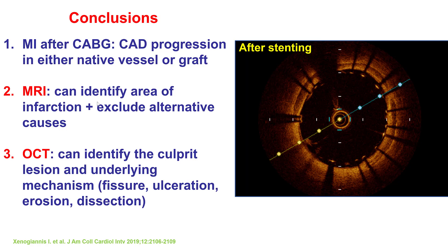And finally, if MRI demonstrates an area of infarction, then OCT can be done in the vessel supplying that area to identify any areas of ulceration, erosion, or thrombus that correspond to the lesion that caused the myocardial infarction, and subsequently undergo treatment. So multimodality imaging with MRI and OCT in combination solved the mystery of myocardial infarction in this patient and allowed successful treatment. Thank you.